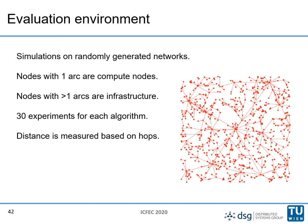To run experiments I simulate randomly generated networks. The topology is created based on connected access points to resemble the internet, which is the target environment for this work. In this topology, nodes with only one arc are considered compute nodes that want to join the fog computing system, while nodes with many arcs are considered part of the infrastructure. To measure distance between nodes, I count the number of hops in the underlying network.